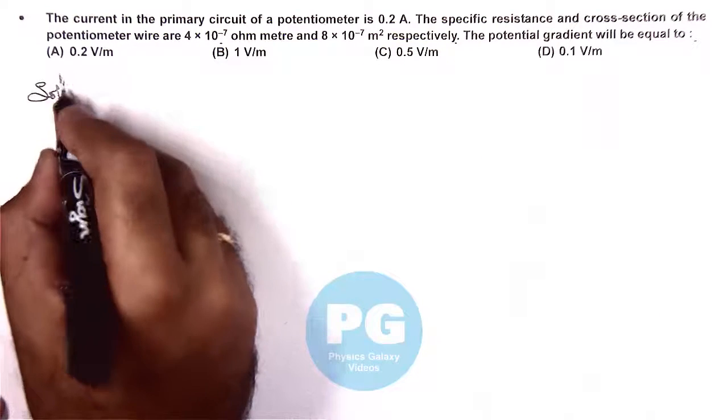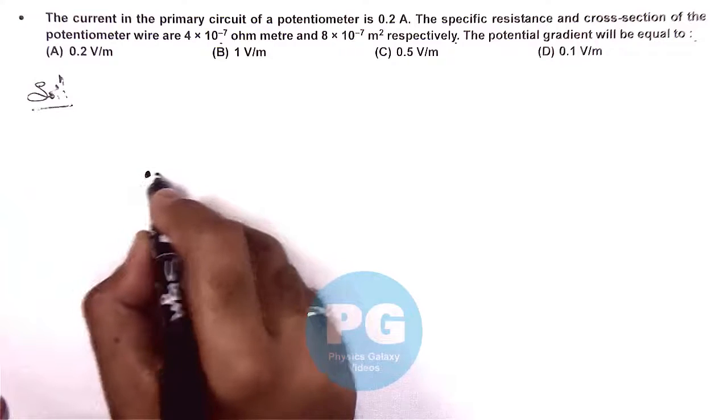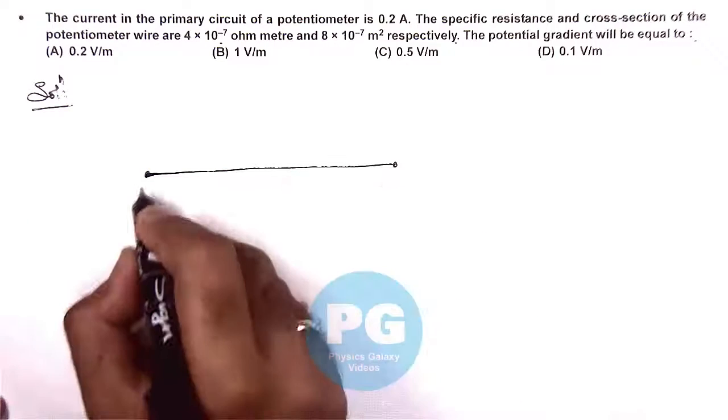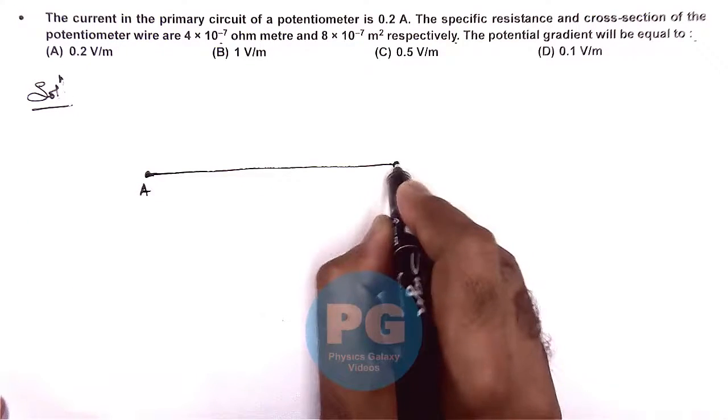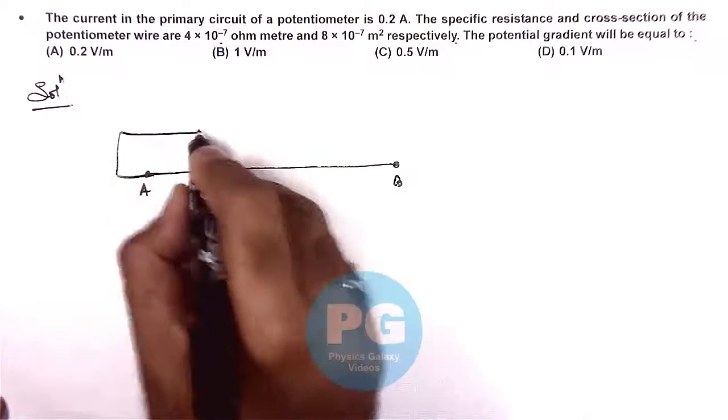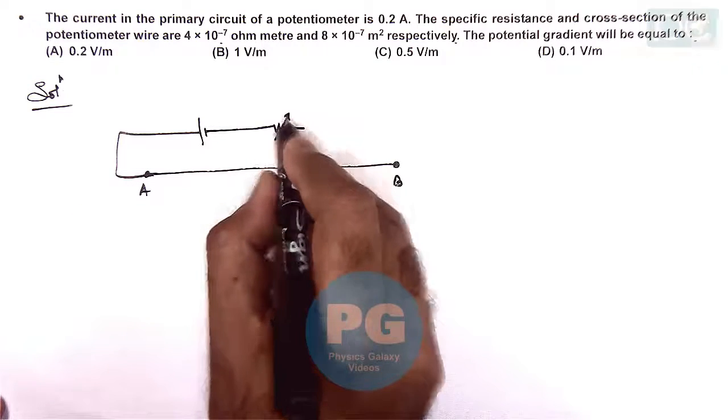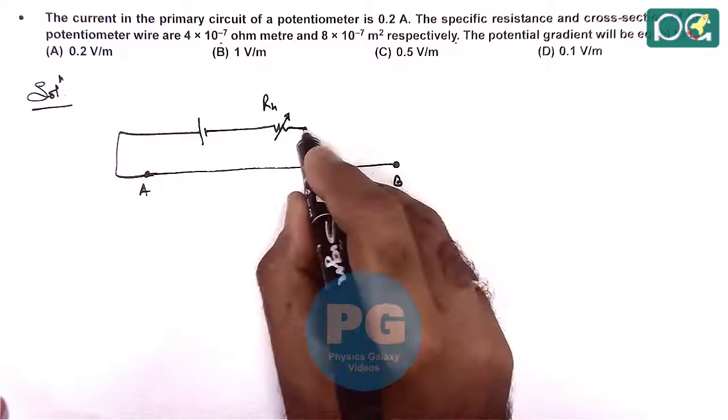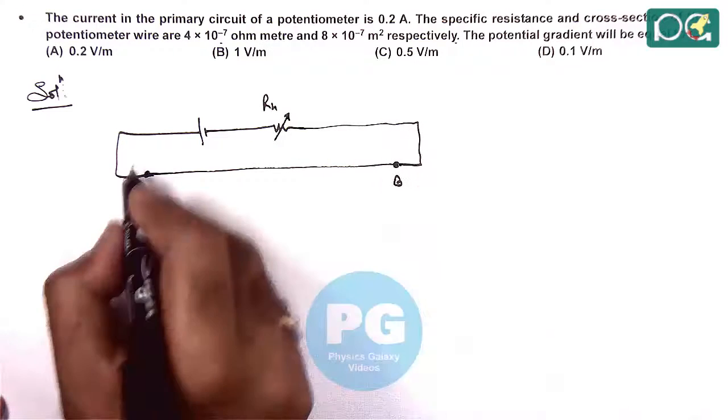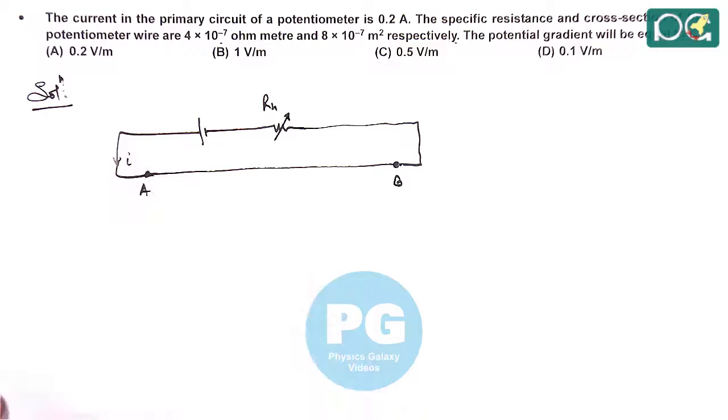Now in solution we can see if this is a potentiometer wire AB, and in primary circuit there is a battery and a rheostat used to control the current. Here it is given that a current is flowing.